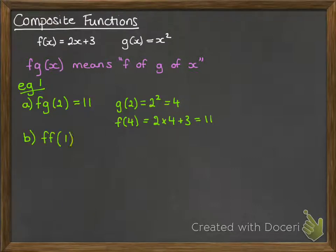Next, if we did f of f of 1, that means we're going to do f(1) first, that gives us 5. Then we put that 5 into f again, which gives us 13.